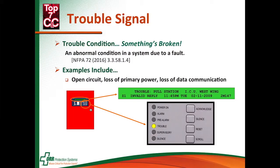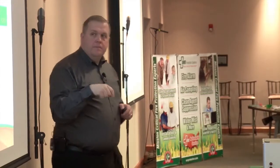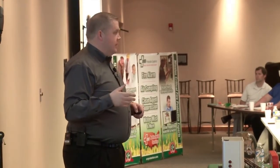Trouble conditions mean that there's something wrong with the fire alarm system itself. At the panel, for example, with this green display, it says we've got a trouble with the pull station ICU West Wing — it's got an invalid reply. So there's a problem with communication between the pull station out in the field back to the panel. And here we've got a little yellow light lit up next to the word trouble, as well as the piezo on the panel going off, making that annoying little noise.